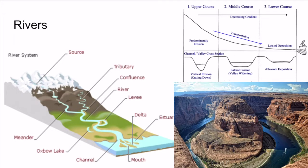We know that gravity causes things to fall, and gravity also causes water to fall. It pulls water down from areas of high elevation, the source, to areas of low elevation, the mouth. A river flows along the path of a channel between these two points, so the steeper the gradient between the regions, the faster the water is going to flow.